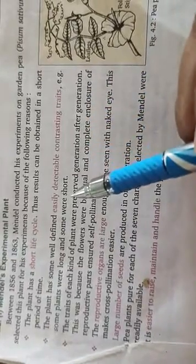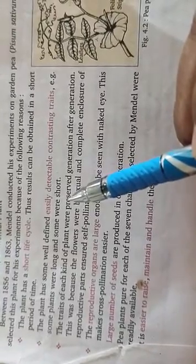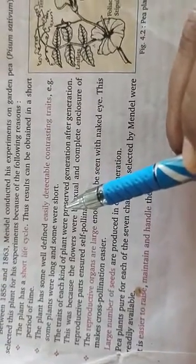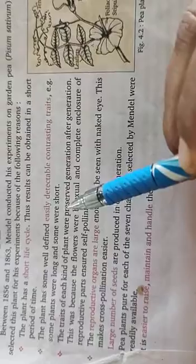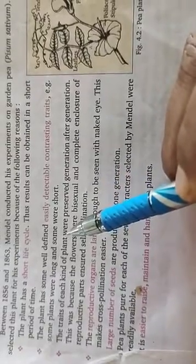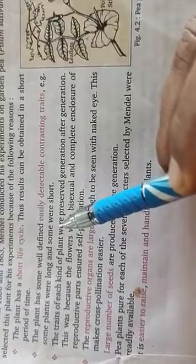The position of flowers can be terminal or axial. The pod can be inflated or constricted. There are seven characters that can be easily observed.